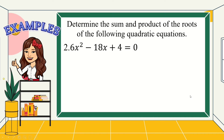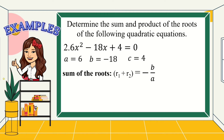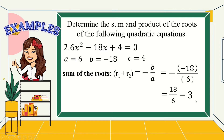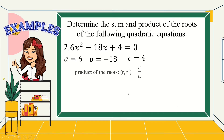For number 2, we have 6x squared minus 18x plus 4 is equal to 0. a is 6, b is negative 18, c is 4. For the sum of the roots, we have negative b over a. Substituting, we have negative of negative 18 over 6. We have two signs here, negative and negative. Combining them, we have positive 18 over 6. 18 divided by 6 is positive 3, and that will be the sum of the roots.